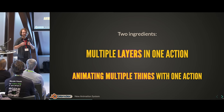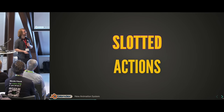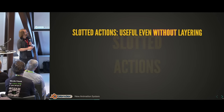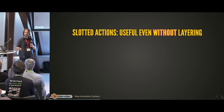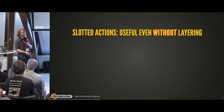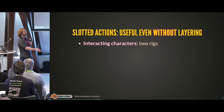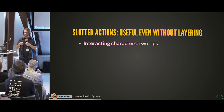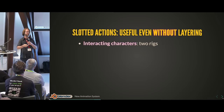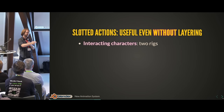We wanted actions to be able to animate more than one object, more than one data block. The solution we came up with we call slotted actions. The nice thing about slotted actions is that it's not just preparation for animation layers — it's actually useful on its own already. For example, there's the example with the sheep and the angel interacting. It's nice to keep tight interactions within the same action, especially in a production situation where you'll be linking animation into other files.